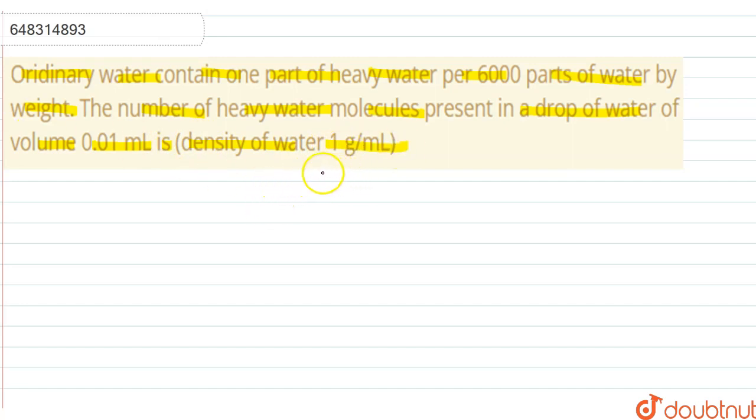We have to calculate the number of heavy water molecules present in a drop of water. The volume is given as 0.01 ml. So here we can state that 0.01 ml is equal to 0.01 gram of water.